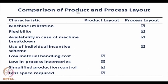We can compare between the product layout and process layout — these two are predominantly the layouts used in practice. In a product layout, the material handling cost is low, in-process inventory is low, production control is simplified, and less space is required. In a process layout, the machine utilization is high, flexibility must be high, there must be another machine available when one breaks down because all machines of one type are in one place, and one should go for an individual incentive scheme.